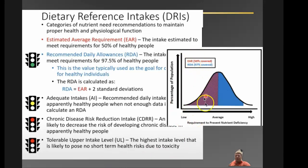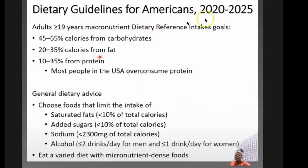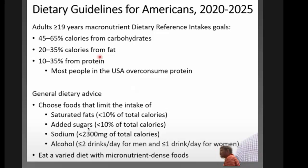The EAR only covers about the lower half of the population. These dietary guidelines came out in 2020, right before everything shut down. For people over 19, the numbers are pretty much the same: good dietary advice includes keeping saturated fats down, keeping added sugars — like fructose and sucrose added externally — down, and avoiding sugary drinks.